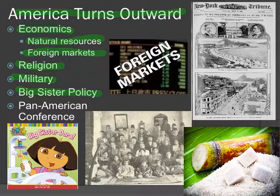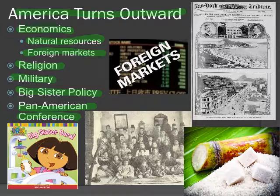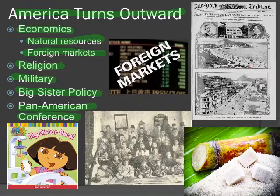To formalize this, the first Pan American Conference was held in 1889 to formally sign trade agreements with Latin American nations. 'Pan' means across or around, so this is across the Americas — North America, Central America, South America. You can see a newspaper from the New York Tribune announcing delegates to the Pan American Conference. The 1889 Pan American Conference formally signed trade agreements with Latin American countries, putting into practice what the Big Sister Policy had put forth.